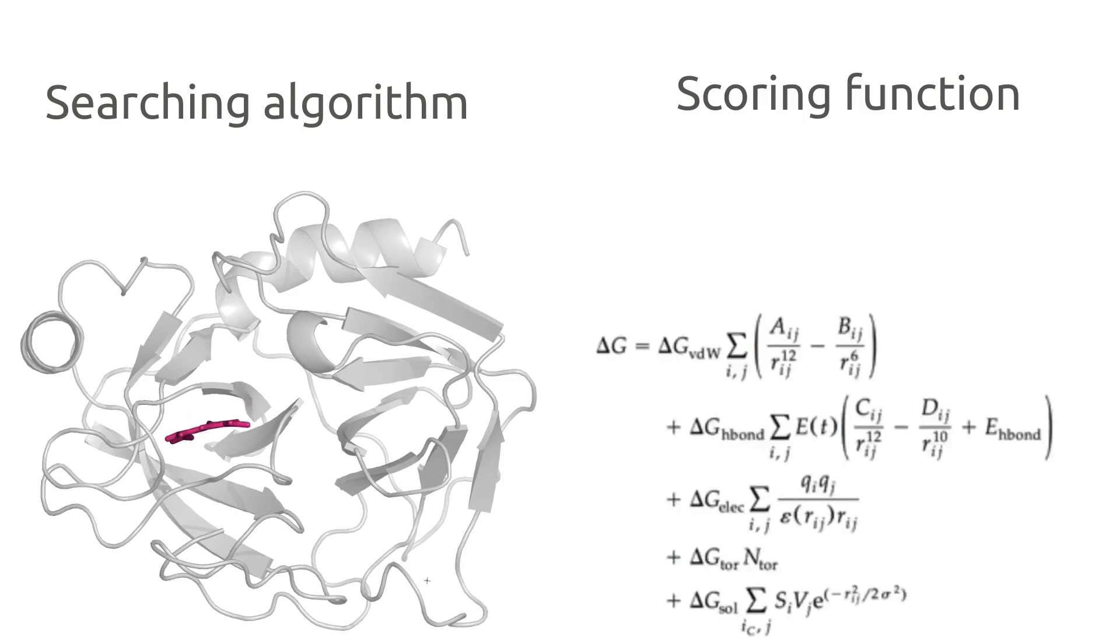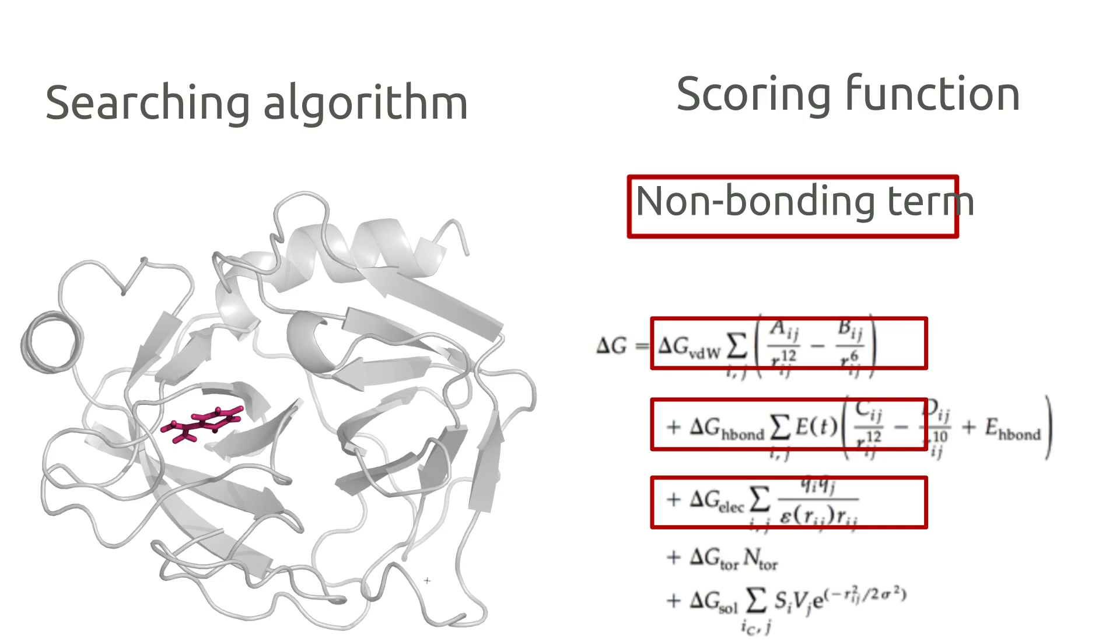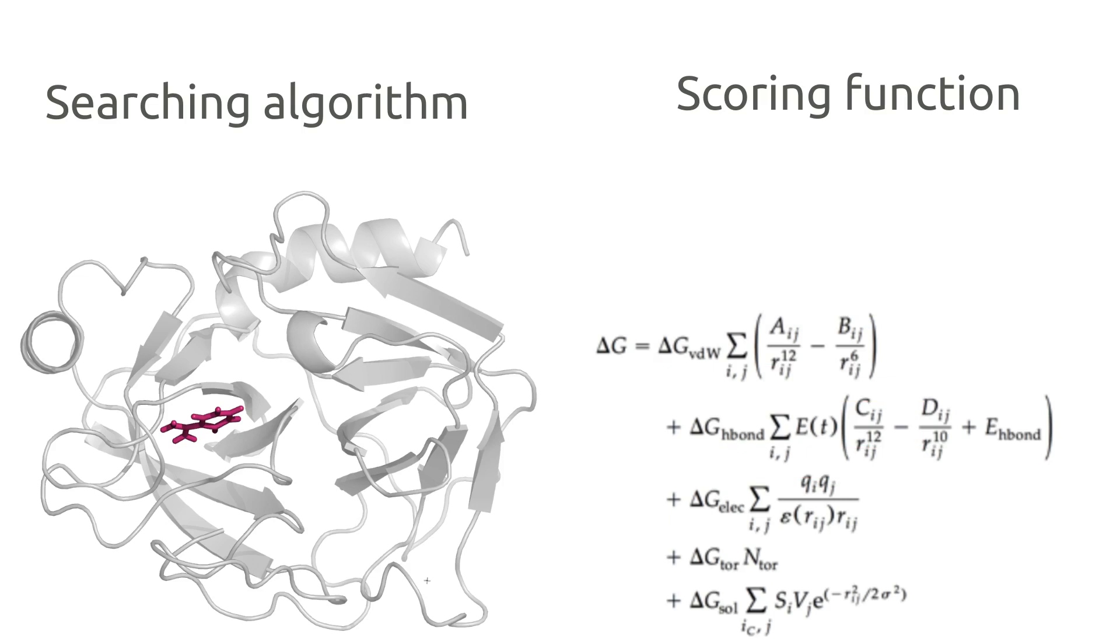Scoring function, on the other hand, evaluates, or as the name says, scores the ligand conformations generated by the search algorithm. Scoring functions often times look intimidating at the first glance, but really it is merely composed by summing basic bonding and non-bonding parameters of the two molecules composing the complex.